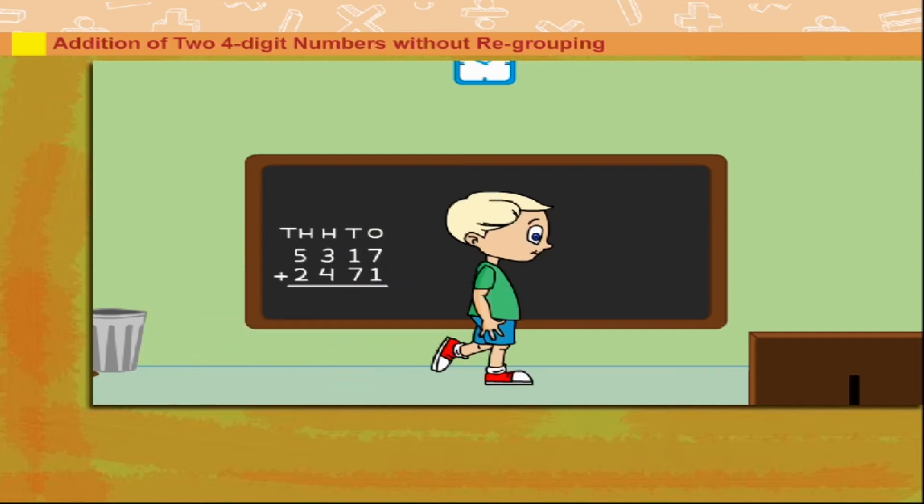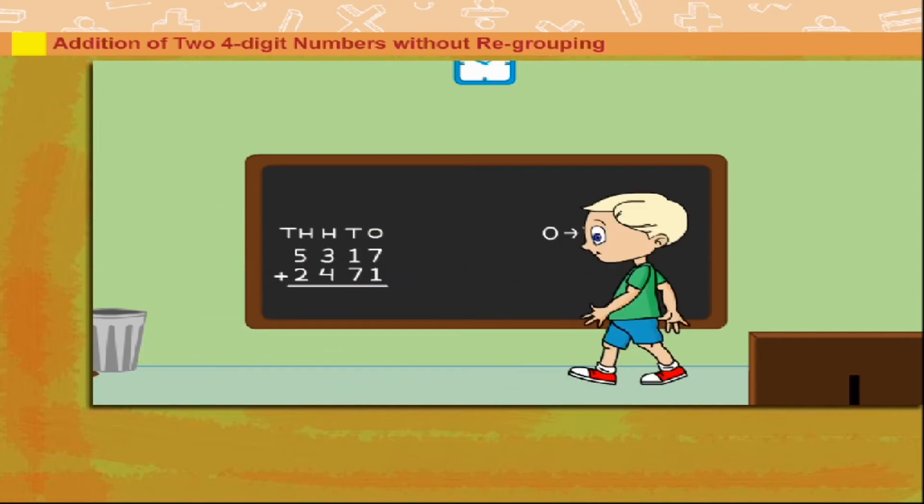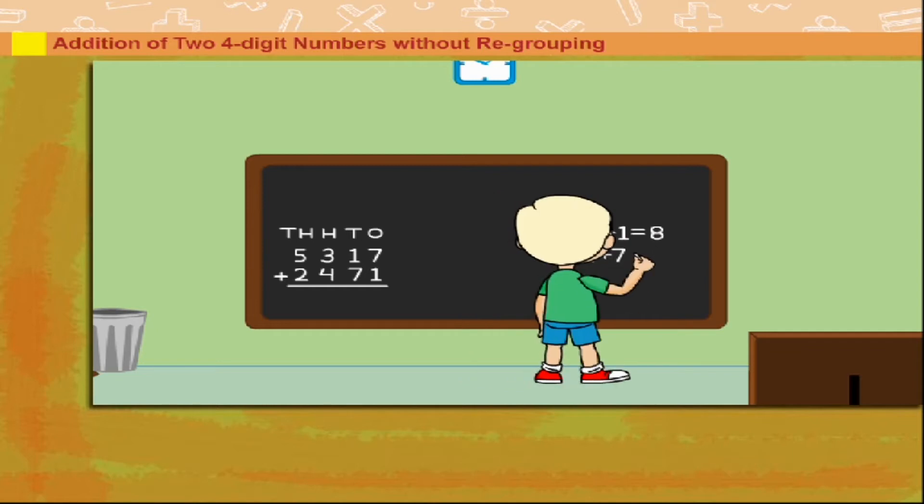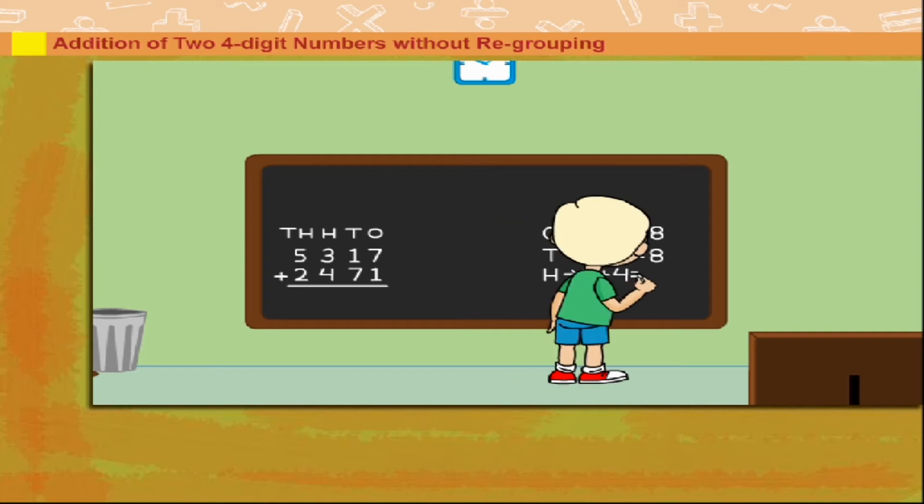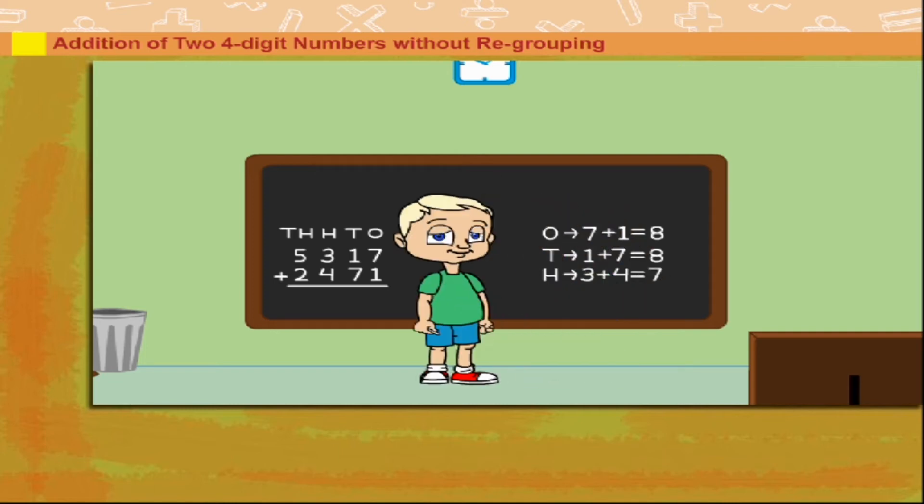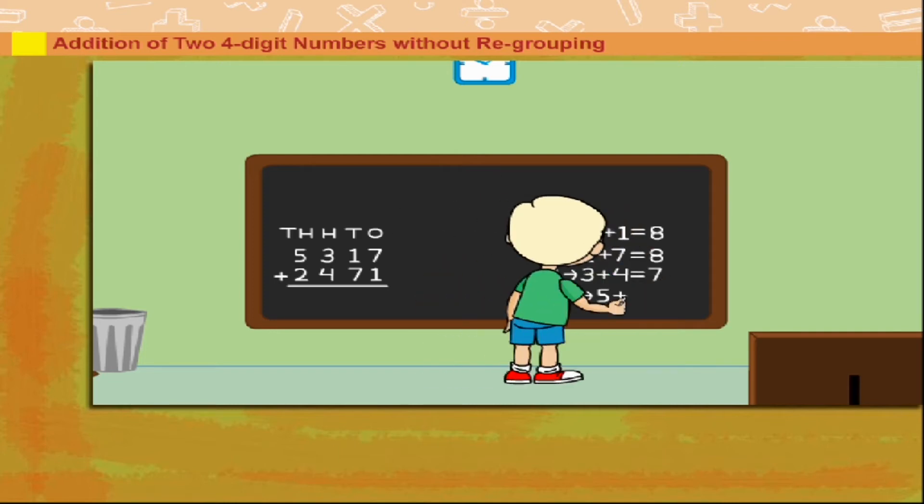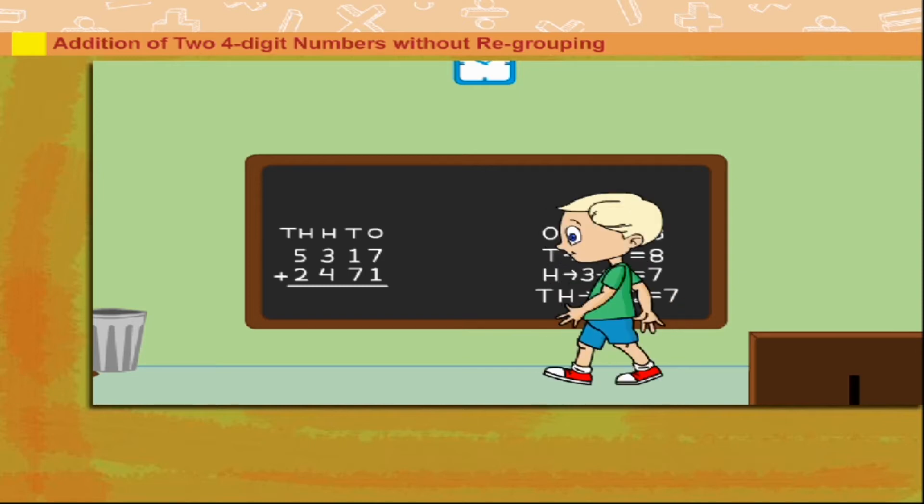He adds the ones: 7 plus 1 is equal to 8, and the tens: 1 plus 7 is equal to 8. He now adds the hundreds: 3 plus 4 is equal to 7, and the thousands: 5 plus 2 is equal to 7.